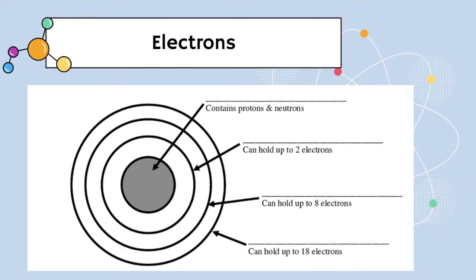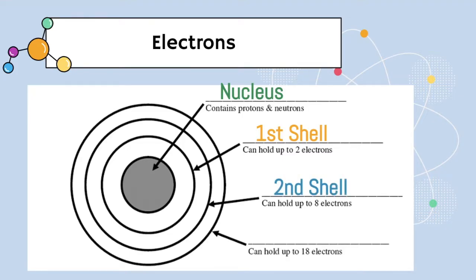Electrons have special rules — you can't just shove all of the electrons into the first orbit of an atom. There are rules. Electrons live in something called shells or energy levels, so only so many can be in a certain shell. Let's look at this more carefully. Here we have a Bohr model of an atom. The first arrow is pointing to the nucleus, which contains the protons and the neutrons. The first shell can hold up to two electrons. The second shell can hold up to eight electrons. And then finally, the third shell can hold up to 18 electrons.